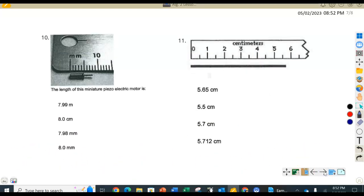All right, let's look at a couple more examples. So trying to find accuracy in measurements. Here it says the length of this miniature piezoelectric motor is. So it says in millimeters. We know that 10 millimeters equals 1 centimeter. So if this is 10, this would have to be 5, 10. I'm guessing this is 10 centimeters. So this would be 8 centimeters.